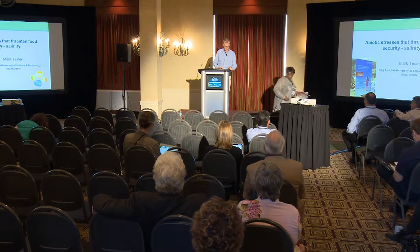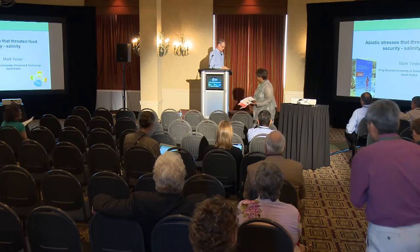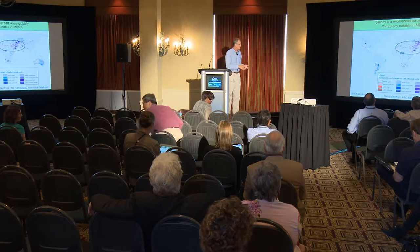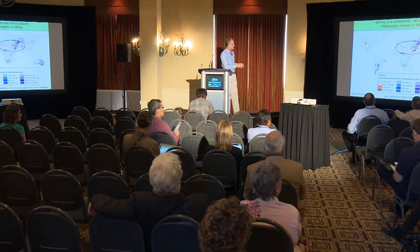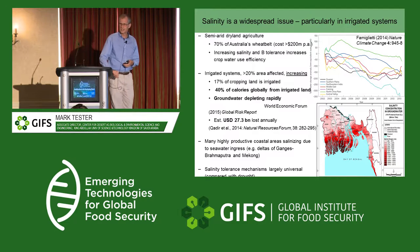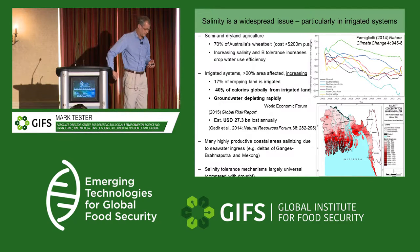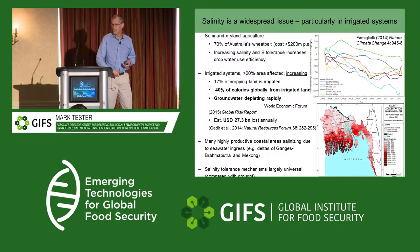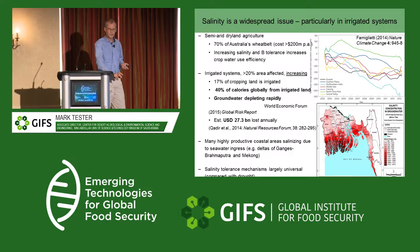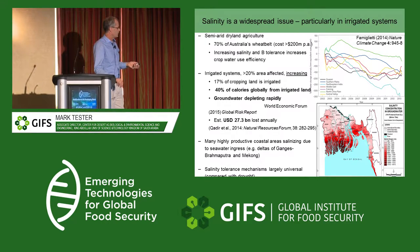Thank you very much. It's good to be here. Salinity is a pretty widespread issue globally. In particular, it's very dominant in the Middle East and North Africa, West Asia, and I'm right in the centre of that particular area of affected grounds. Classically, I've been thinking about the effects of salinity on dry land agriculture, where I did the last decade of my research in southern Australia where subsurface salinity was affecting the Australian wheat belt. However, when I moved to the Middle East and started to appreciate much more the importance of irrigation in agriculture and the importance of salinity in irrigated systems, I really started to focus much more on irrigated systems.